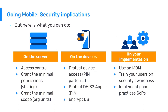There are some actions you can take in your implementation to ensure information is secured. On the server, you can control the amount of access to programs and data by the user's capture organization unit or sharing settings. On the devices, set a PIN code to block the device, but also set a PIN code to block the app. An encrypted database is also a possible way to secure your data. On your implementation, use tools such as MDMs to control the use of the devices, train your users on security awareness, and implement good security practices.